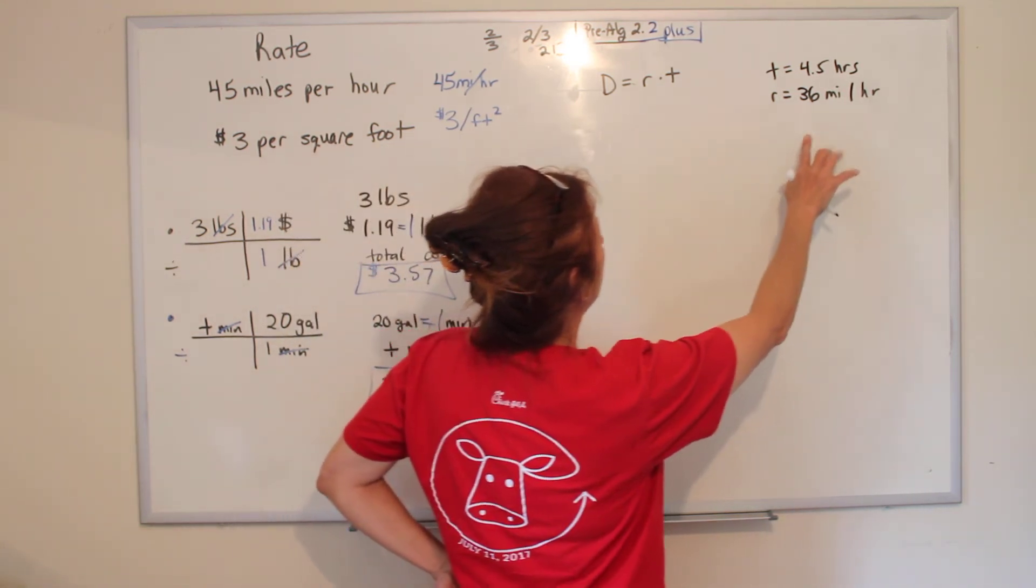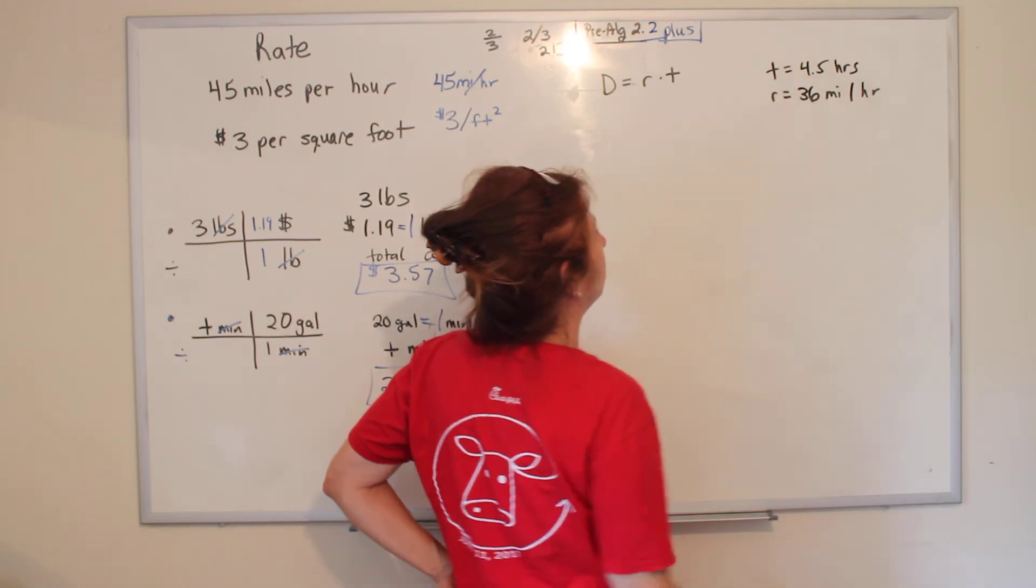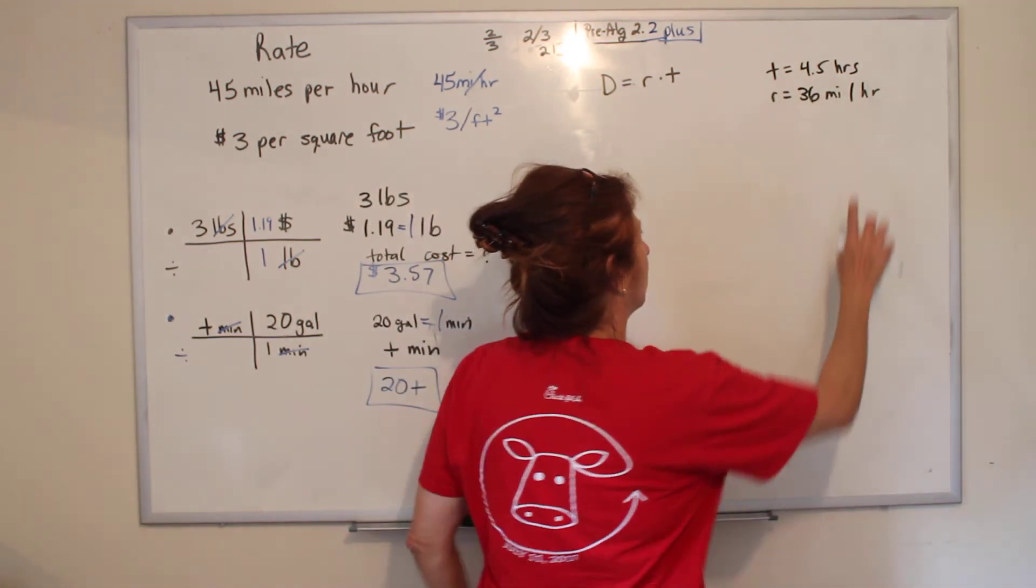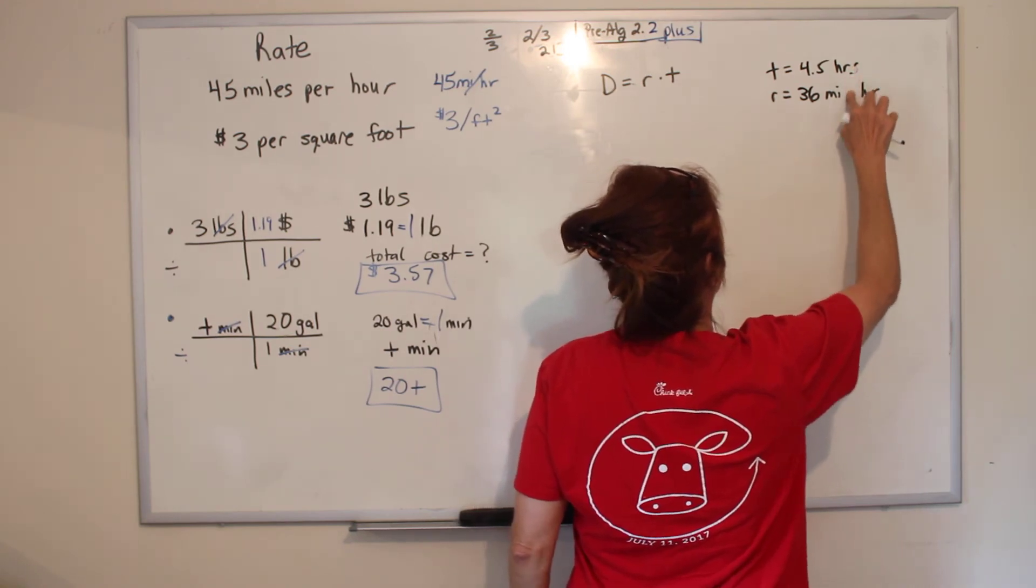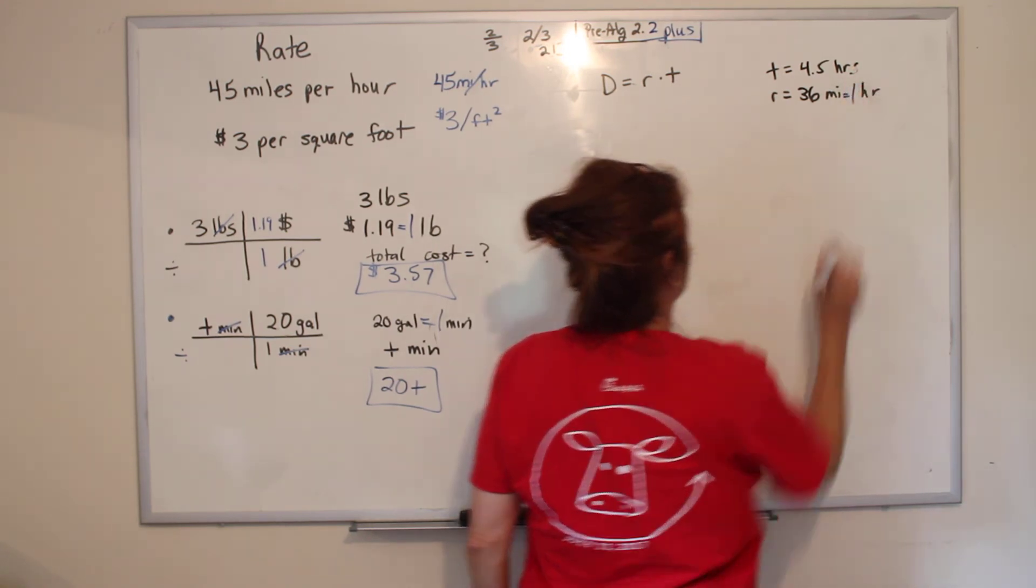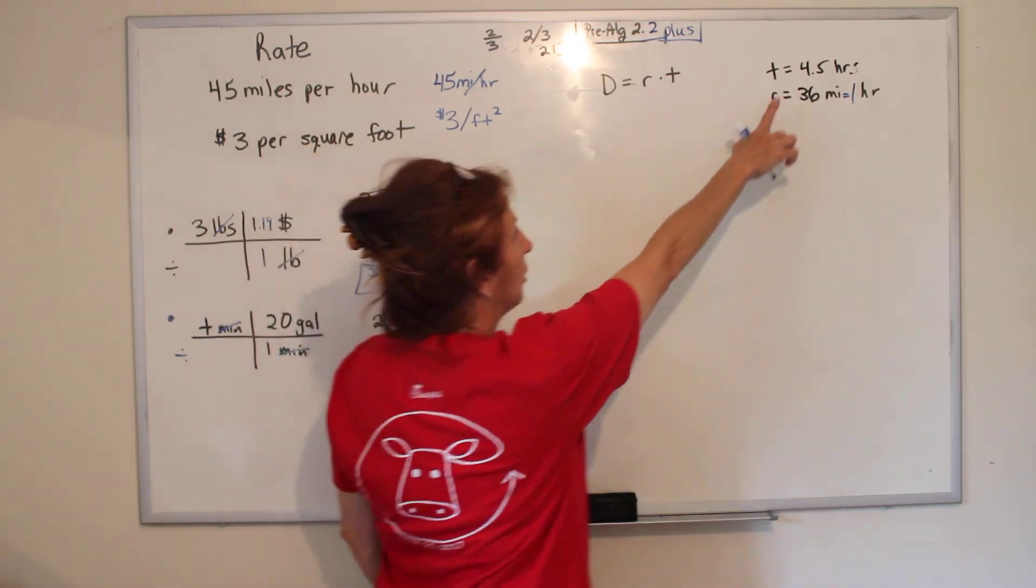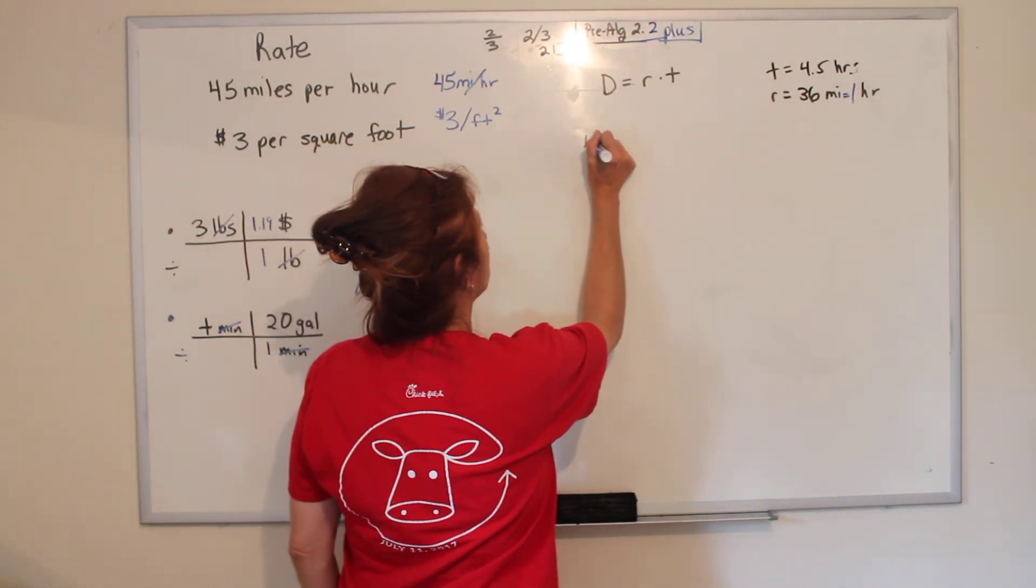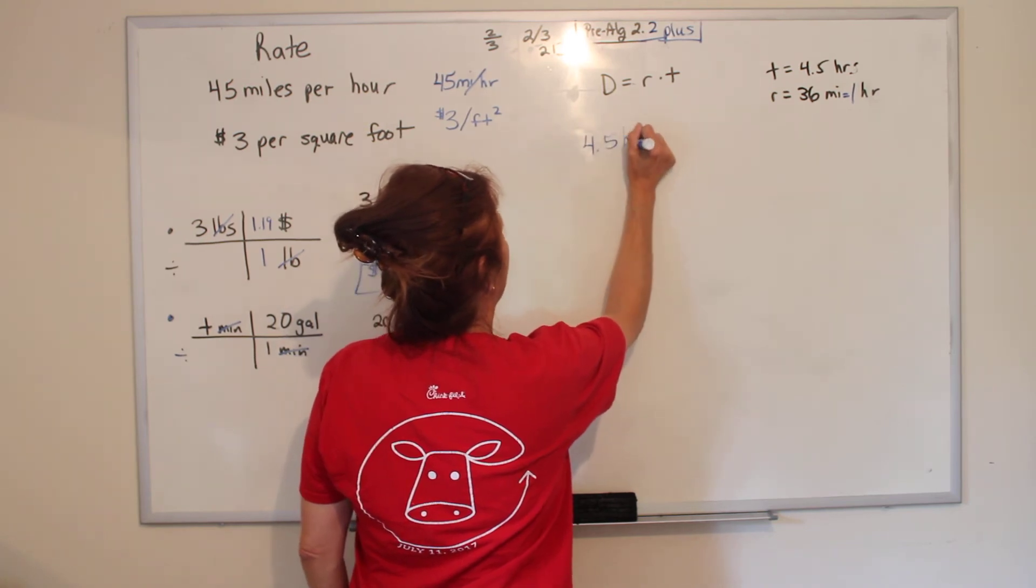So we have a time of 4.5 hours, and we have a rate that is 36. We're going 36 miles per hour. So it's 36 miles in one hour. We start by writing down what we know, which is 4.5 hours. We draw our railroad tracks.